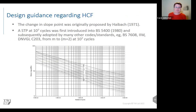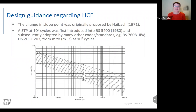Fatigue damage in offshore wind structures occurs mainly at low stress ranges and very high numbers of cycles. If the fatigue damage occurs at a stress range very close to the constant amplitude fatigue limit, then the position of that limit — also known as the slope transition point — is very important for fatigue design. The point at which the slope changes affects the fatigue life predicted using these SN curves. This change in slope was originally proposed by Haibach in 1971, and it's the point at which the slope changes from M to M+2, accounting for the smaller influence of small stress cycles on fatigue crack propagation in the high cycle regime under variable amplitude loading. It was included in various design standards and originally placed at 10⁷ cycles.